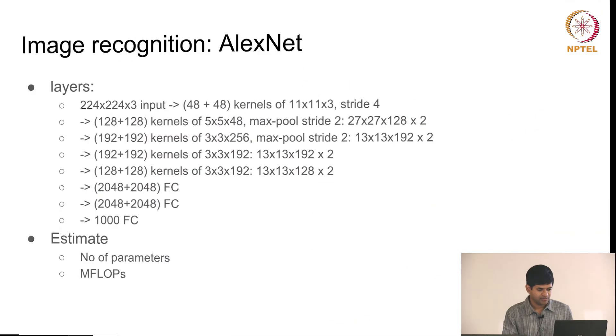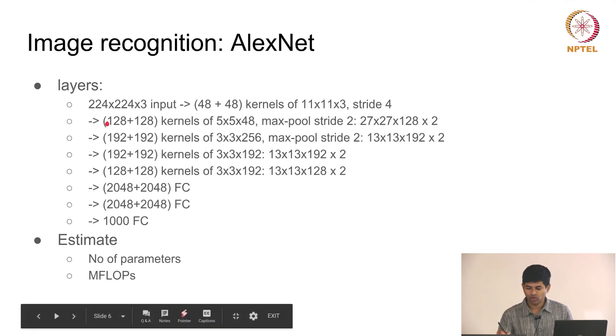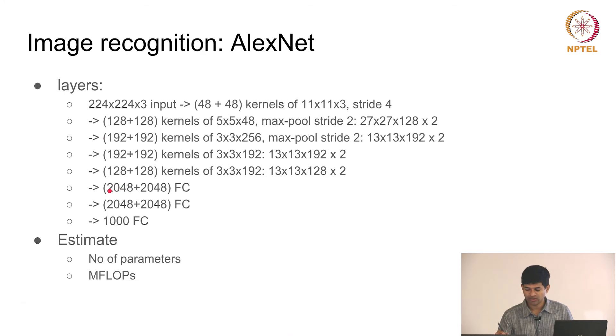But that is just the first layer. After that you have 4 more such convolutional layers and then you have 3 so called fully connected layers. A fully connected layer is literally as the name suggests: you have n inputs, m outputs, n into m connections. The number of connections is large, number of multiply adds is also correspondingly large.